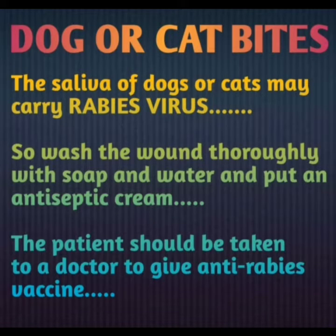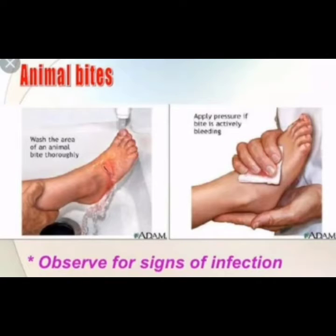What first aid should be taken in case of dog or cat bites? The saliva of dogs or cats may carry rabies virus. So wash the wound thoroughly with soap and water and put an antiseptic cream — whichever is available at home.